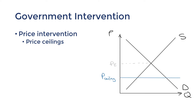Examples of price ceilings aren't very common because most policymakers know that they cause more problems than they solve. One of the most obvious problems is the disequilibrium it creates. As you can see in this diagram, when the price is set below equilibrium, demand expands and supply contracts, causing a shortage.